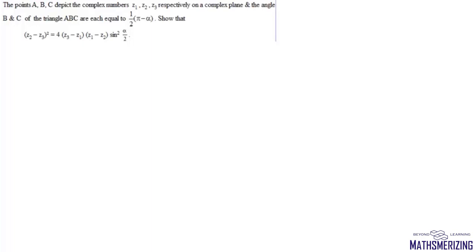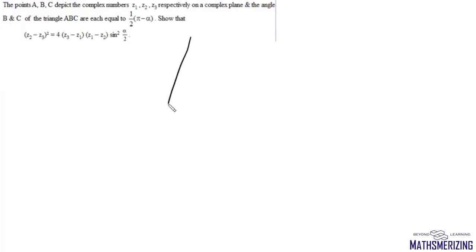The next question: points A, B, and C depict complex numbers z1, z2, and z3 respectively on a complex plane, and angles B and C of the triangle are each equal to pi by 2 minus alpha by 2. We need to prove the given result. We have triangle ABC.